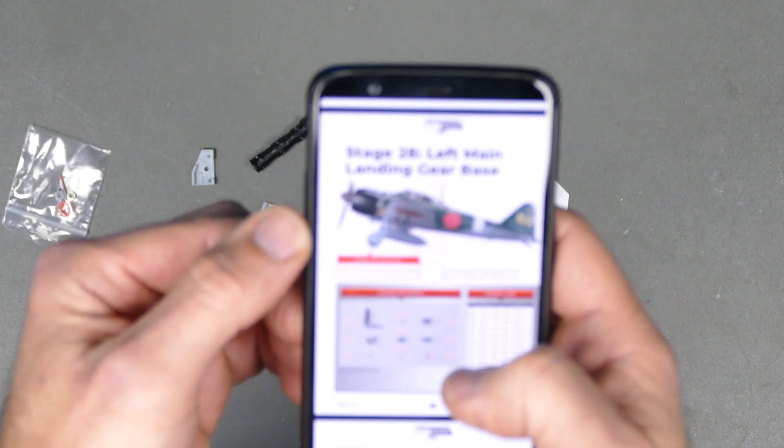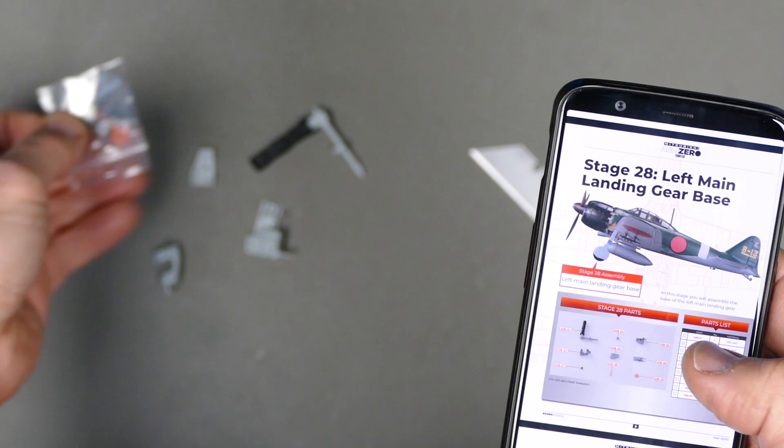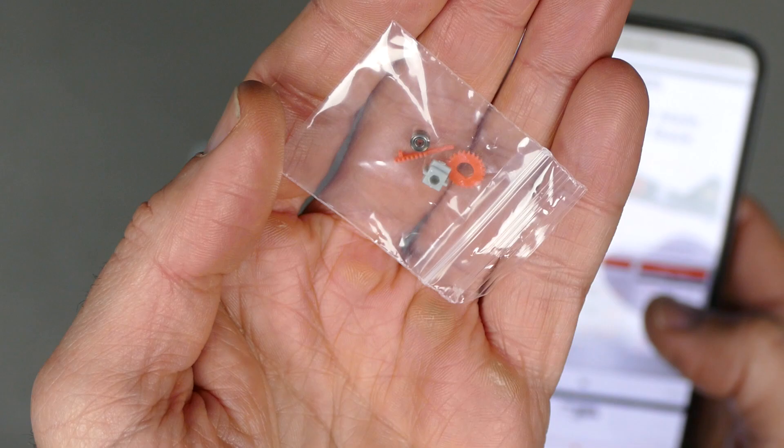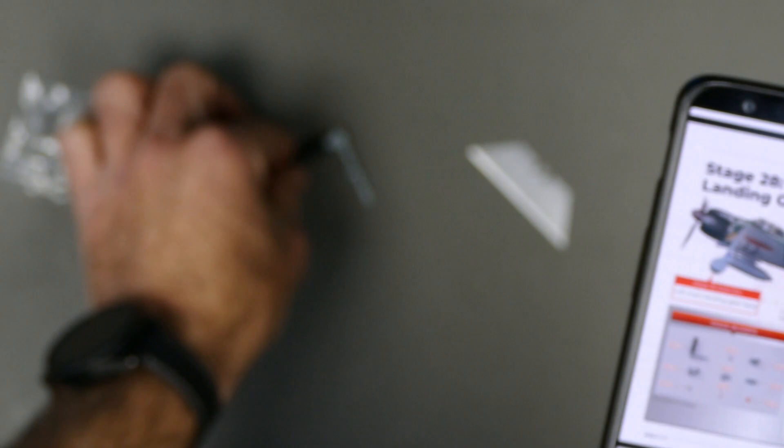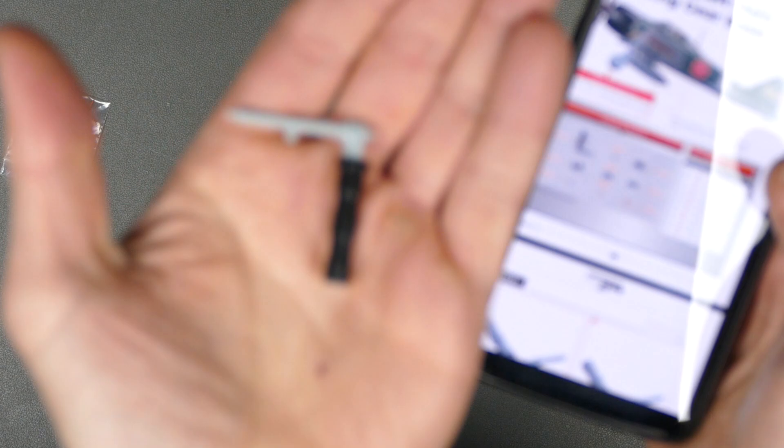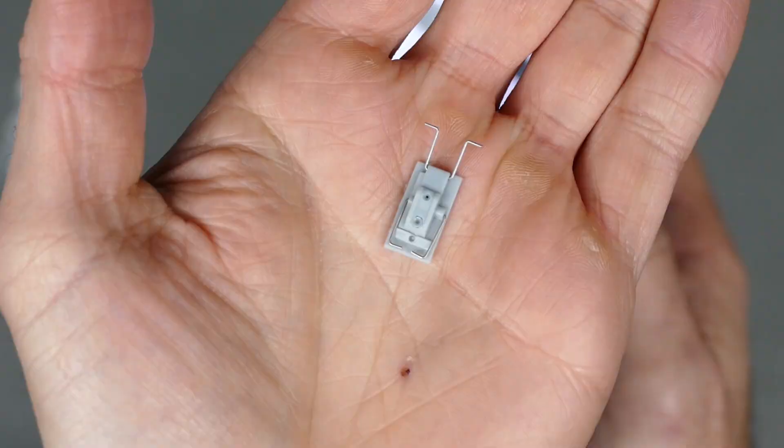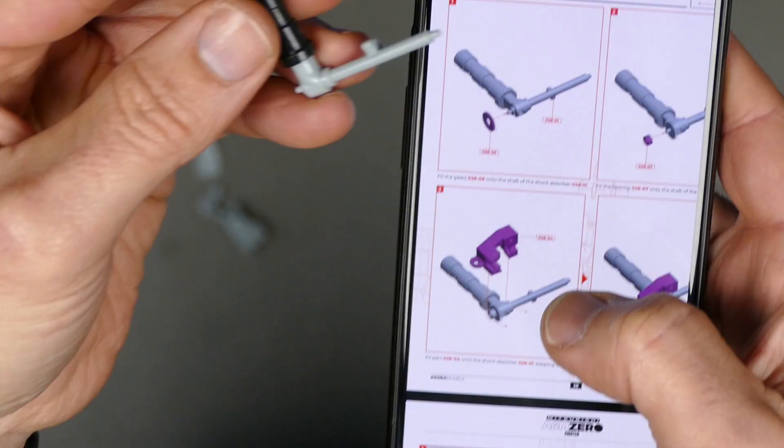But let's move that to the side. Because now we are doing stage 28. And that is left main landing gear base. Now check out some of the details and intricacies in this particular set. Look at those gears. There's a tiny bearing in there as well. That's crazy. Some ABS resin parts and majority are plastic. But yeah this set is amazing. A lot of detail in this one. Even the little metal brackets in there as well. Crazy.